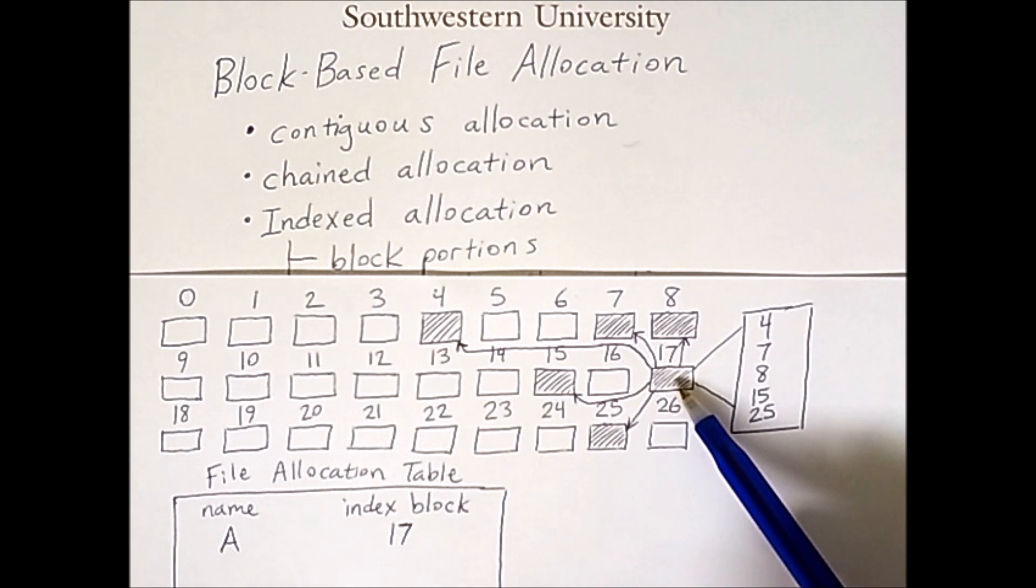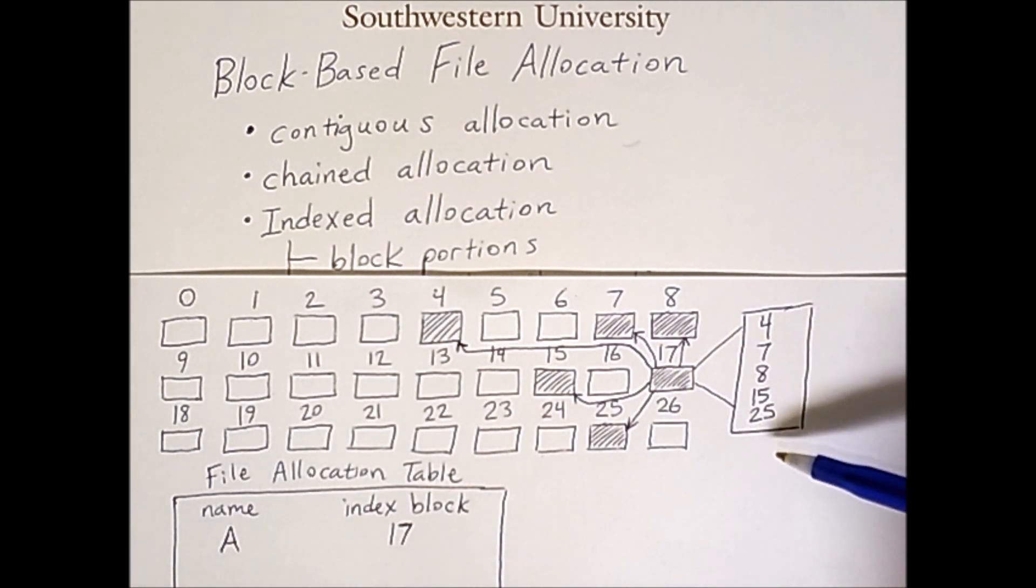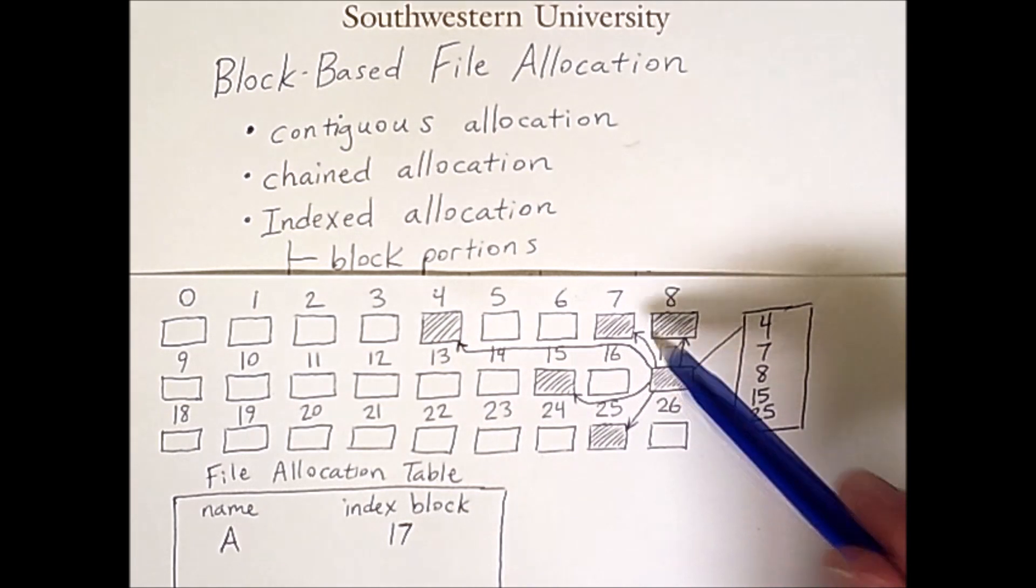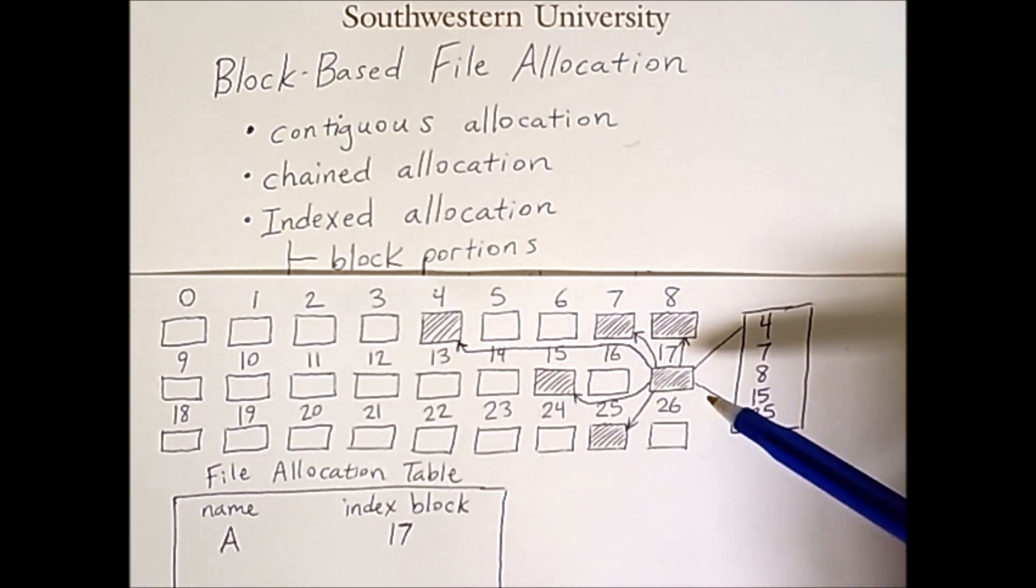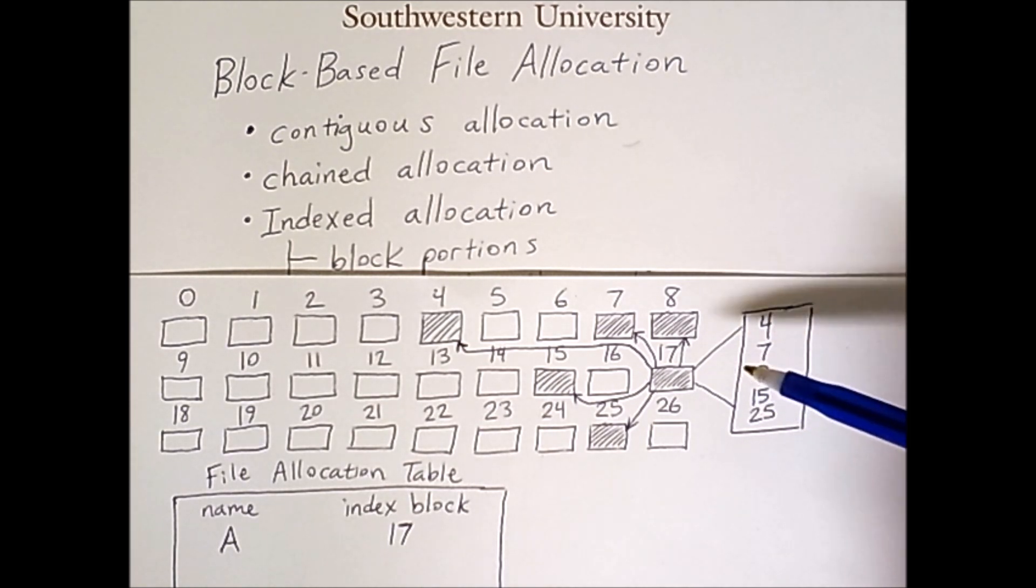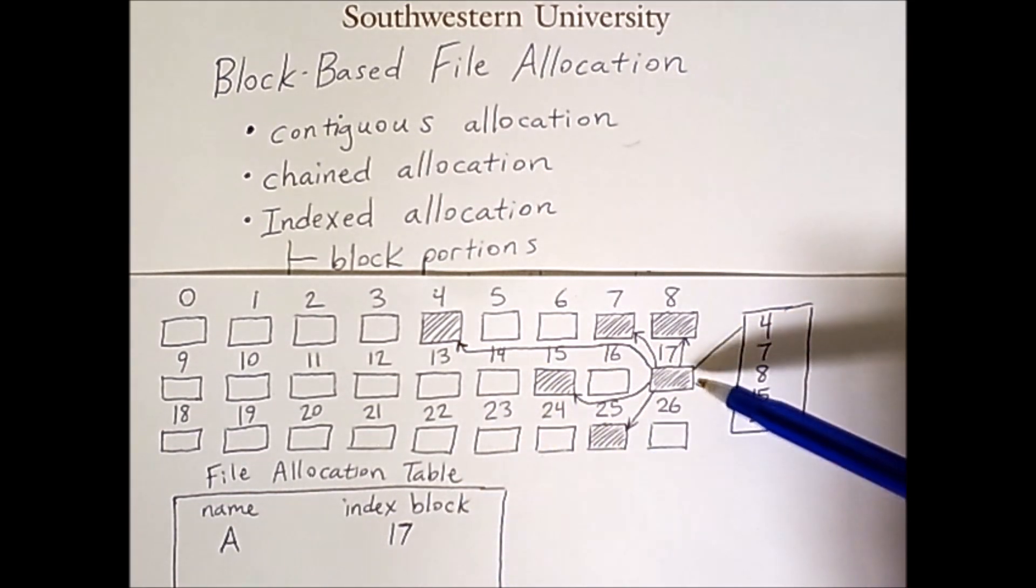The file allocation table indicates that the index block for file A is block 17. If we go to block 17 then we see that block 17 contains a list of blocks. In this case 4, 7, 8, 15 and 25. And the index has a pointer to each of those blocks 4, 7, 8, 15 and 25. So the file can be reconstituted by combining the contents of these blocks in the order that is listed in the index block. A benefit of this over chained allocation is that once the index block 17 has been read into memory the OS knows where all remaining parts of the file are. This means that the disk can plan to intelligently read all of these files from the disk if need be.